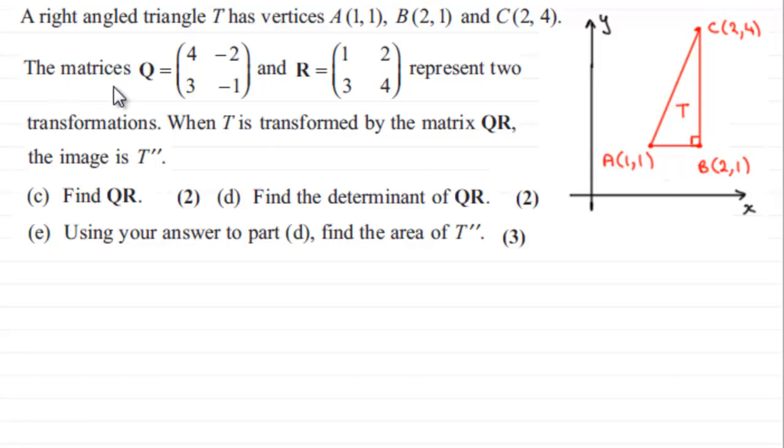We're given these matrices Q, which equals 4, 3, -2, -1, and matrix R which is 1, 3, 2, 4. We're told that these two matrices represent two transformations. When T is transformed by the matrix QR, the image is T double prime.